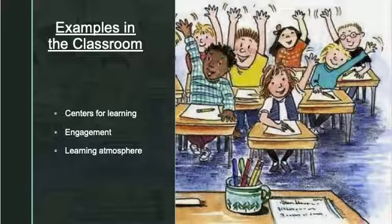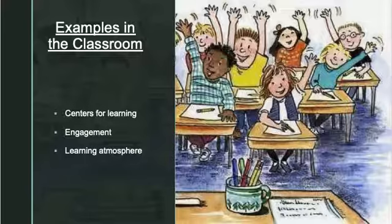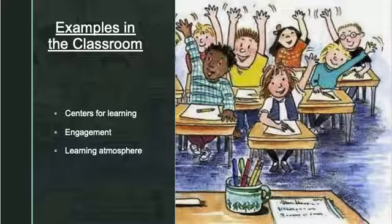Examples in the classroom include the teacher dividing students into groups that rotate through centers for a certain amount of time. Once the timer goes off, the students know to move on to the next center. The teacher will have already covered the material so students know what is expected of them at each station. Centers use the five stages by having direction, a visual state of knowing what to do at each station, what to do once the time is up, and a way for teachers to see how students adapt. Centers are cut into short increments of time — usually 15 to 20 minutes — so students aren't bored or messing around.